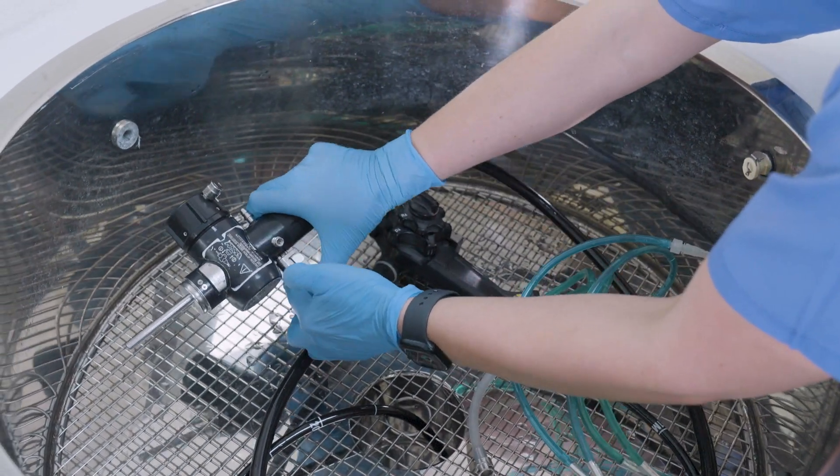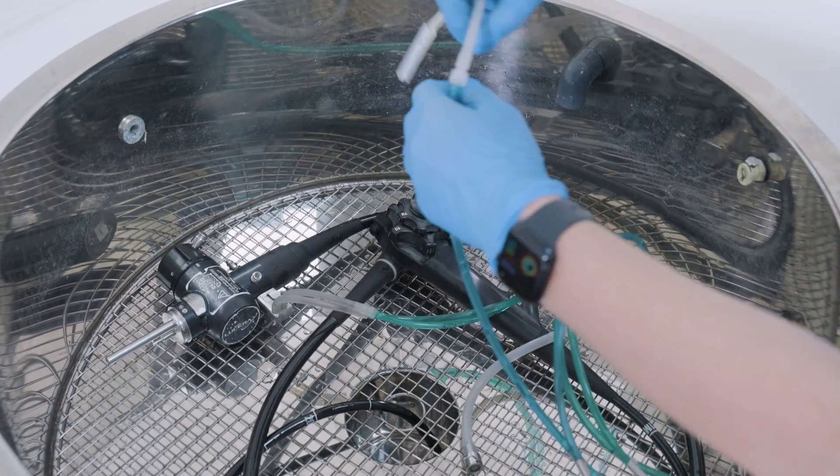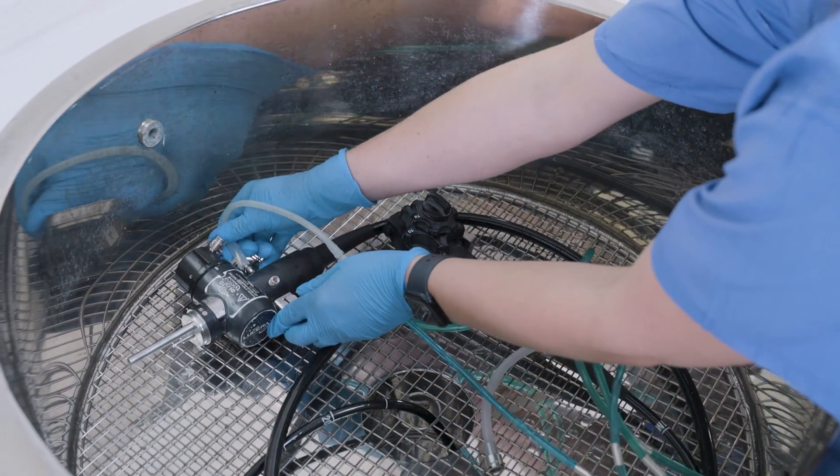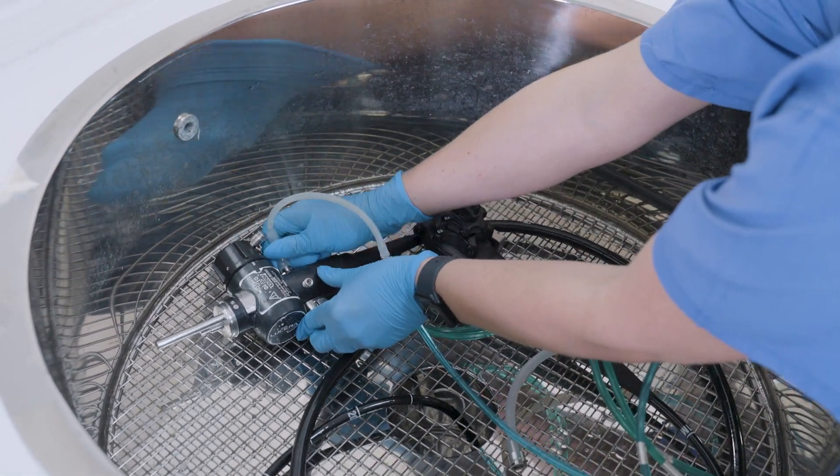The reason the tip of the endoscope needs to sit within the canister of the chamber is so that the tip of the endoscope also gets a clean using the nanoparticles of hydrogen peroxide.